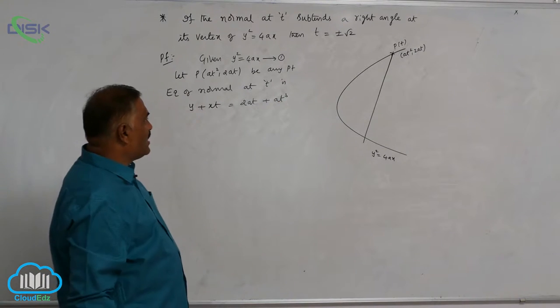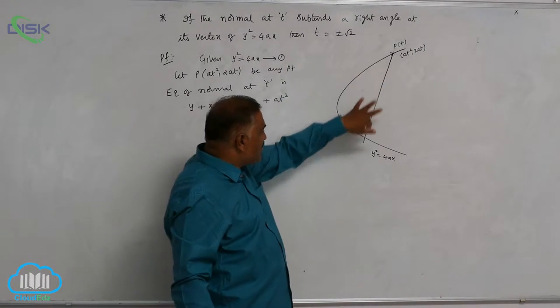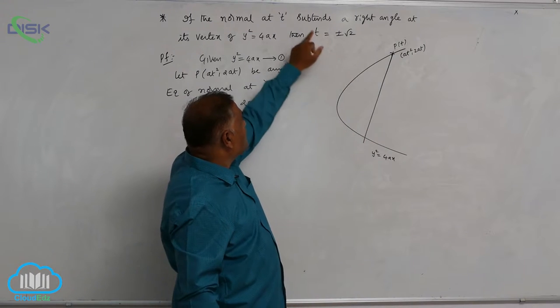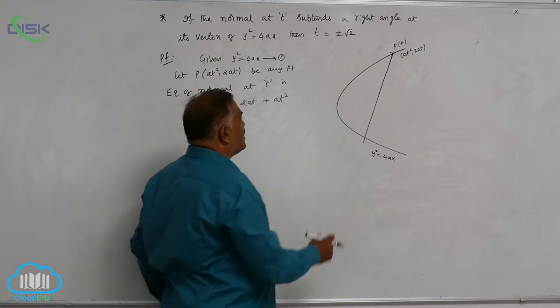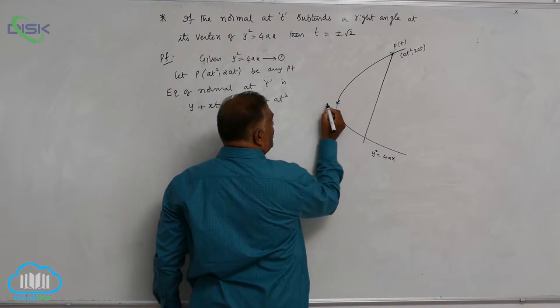Now, you can see very clearly. If this normal equation is like this, he says that normal subtends a right angle at its vertex. What is vertex of the parabola? 0, 0.